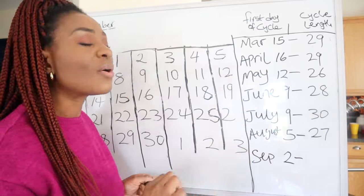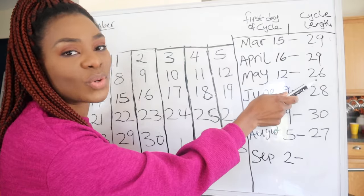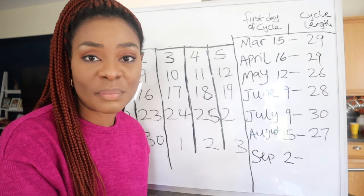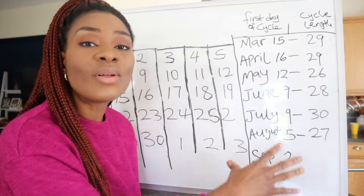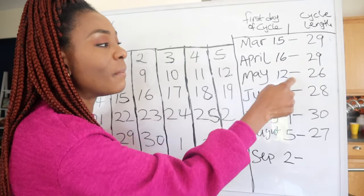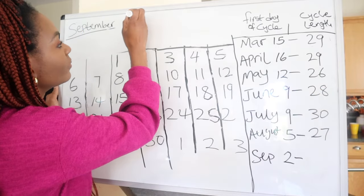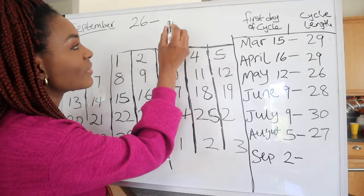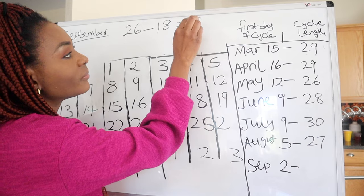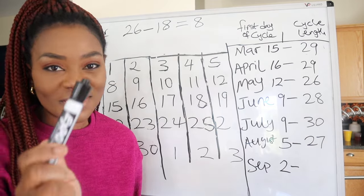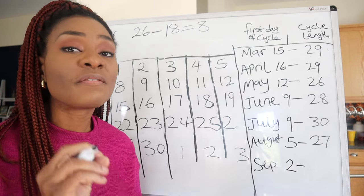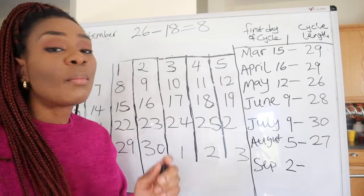To calculate the first day of your fertile window, take the shortest cycle length from your six-month record — for me that's 26. You're going to write: 26 minus 18 = 8. I know what you're thinking — where did 18 come from? It's a little involved but I'll explain it quickly. Write down the numbers 18 and 11 somewhere in your notes.